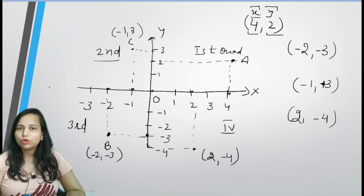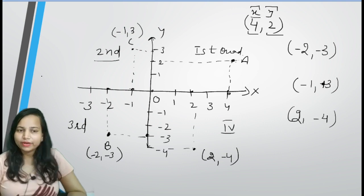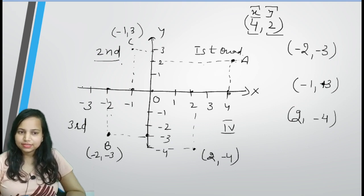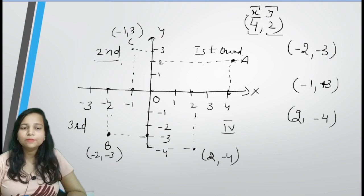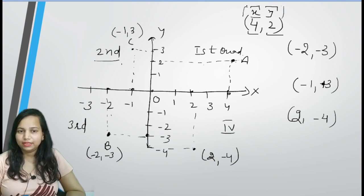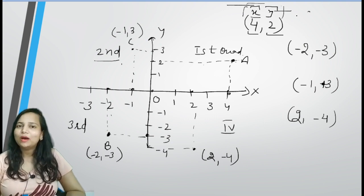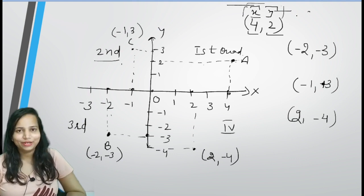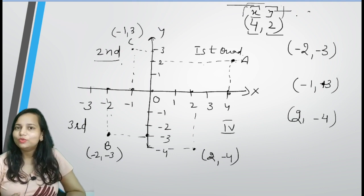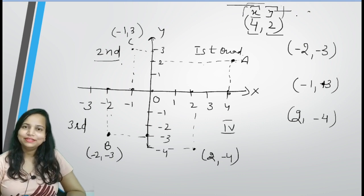So this is all the concept of coordinate geometry — kuch bhi tough nahi hai, bahut hi easy chapter hai. 4 quadrants hote hain, horizontal line ko x-axis bolte hain, and vertical line is y-axis. Coordinates mein pehle x-axis likhte hain — x is called abscissa, and y is called ordinate. Next time hum iske exercises karenge, questions karenge, examples karenge — toh aapko aur clarity ho jaayegi. So we'll meet you next time in the next video — tab tak ke liye, thank you and bye-bye.